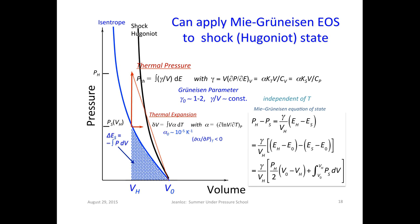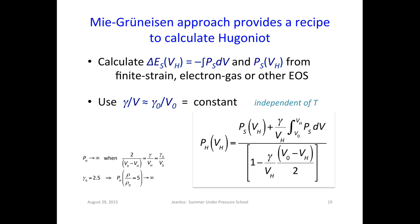If we know how to calculate the isentrope pressure, the isentrope energy, and the Grüneisen parameter — say from some assumed equation of state or theoretical calculation — we can derive the Hugoniot pressure. Notice that if the volume change on shock compression reaches the condition where 2/(V0 - Vh) equals gamma/Vh, the Hugoniot pressure becomes infinite — a kind of runaway thermal instability where, as you hit your sample harder and harder, instead of compressing it more, you're heating it so quickly that you simply can't densify it further. This leads to the issue of how we determine the Grüneisen parameter at high pressures.